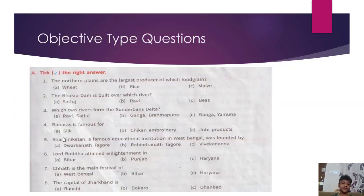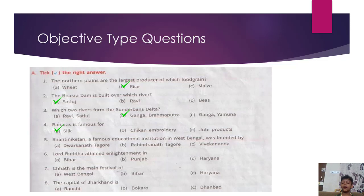Objective Type Questions. A. Pick the Right Answer. The Northern Plains are the largest producer of which food grain? The Bhakra Dam is built over which river? Which two rivers formed Sundarbans Delta — Ganga and Brahmaputra? Banaras is famous for silk. Shantiniketan, a famous educational institution in West Bengal, was founded by Rabindranath Tagore. Lord Buddha attained enlightenment in Bihar. Chhath is the main festival of Bihar. The capital of Jharkhand is Ranchi.